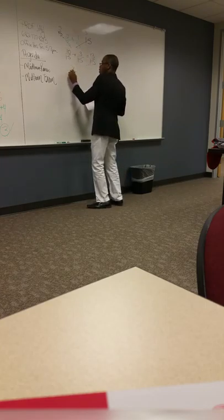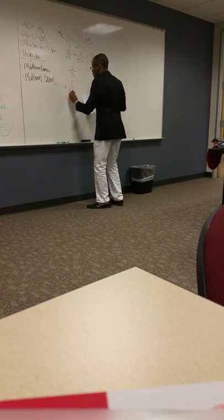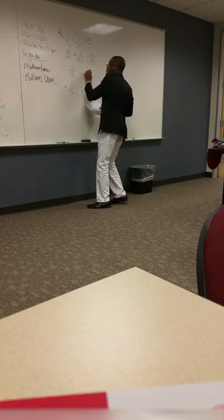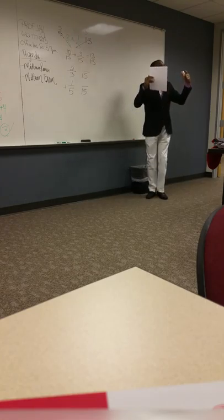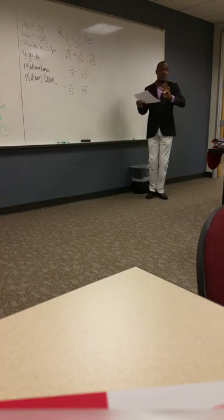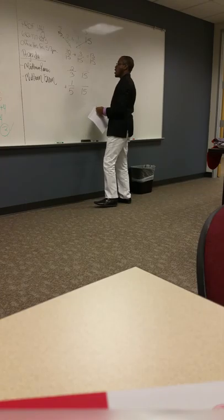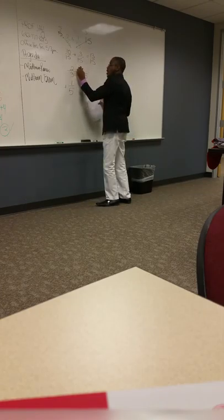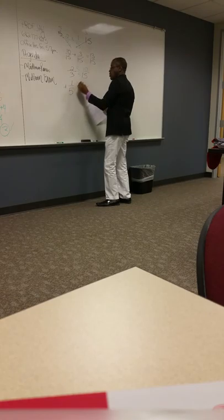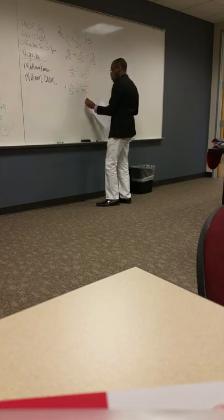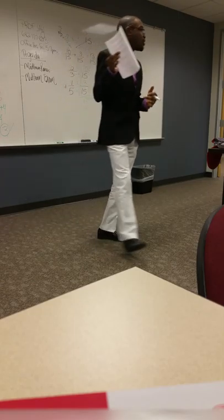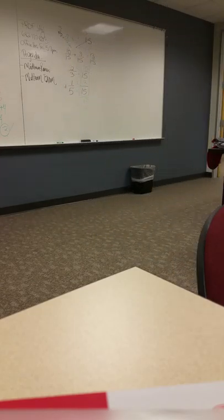For the vertical method: to get 15 we multiply 3 by 5. What I do to one side I do to the other: times 5 gives 10, times 3 gives 3. So 10 plus 3 is 13, over 15. Same answer. I'm a pretty big fan of the vertical way — that's just how I operate, although I can do both.